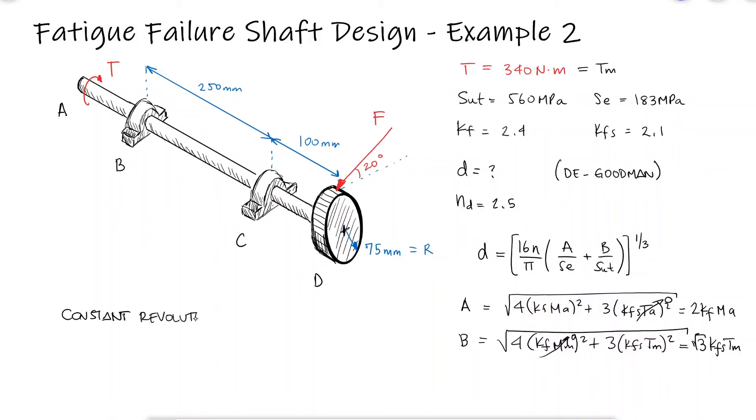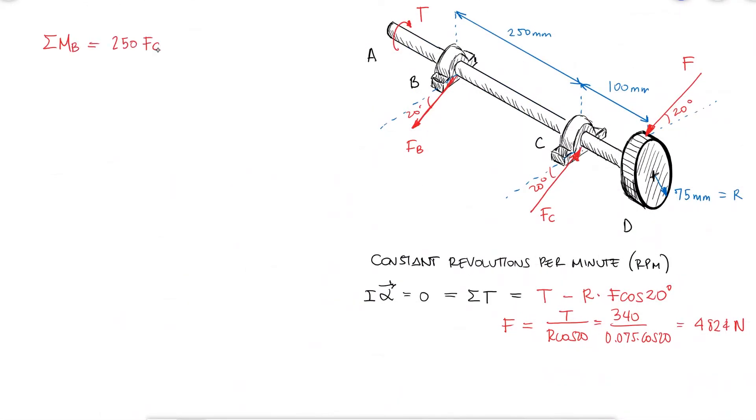Since the shaft is rotating at a constant angular velocity, the angular acceleration is zero, and therefore the sum of torques is zero. As opposed to example one, we don't need to draw a bending diagram for two orthogonal planes. Since the direction of the only external force is angled at 20 degrees above the horizontal plane, the reaction forces at B and C will have the same orientation. A sum of moments about B would reveal the value for the reaction force at C, and the sum of forces in the 20 degrees direction would reveal the value for the reaction force at B.